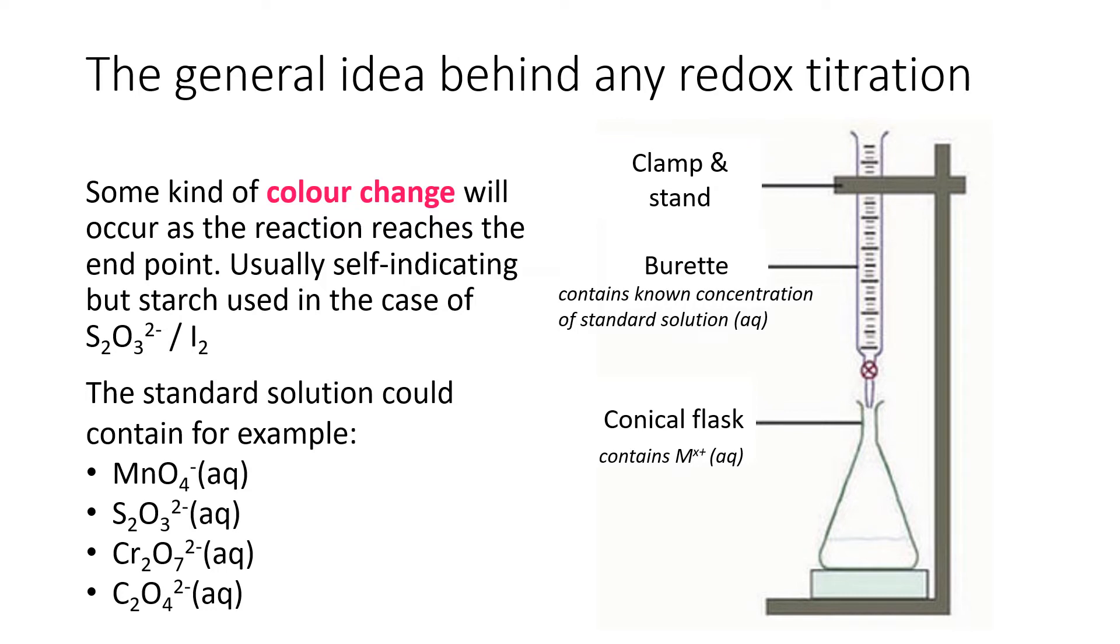Normally, some kind of colour change will occur as the reaction reaches the end point. It's usually self-indicated for this reason, but starch is used in the case of S2O3²⁻/I2 titrations. The standard solution could be a number of things, all tend to be oxidising agents or reducing agents of some kind.